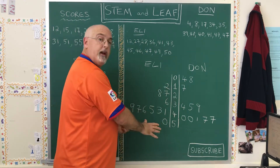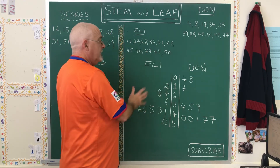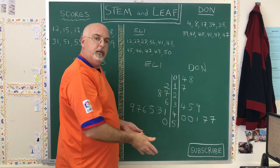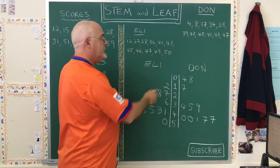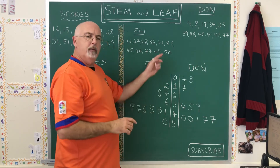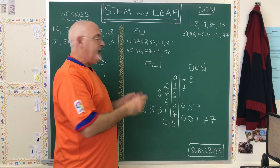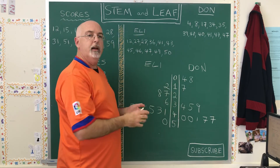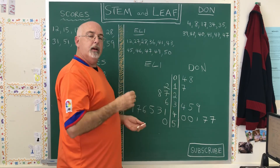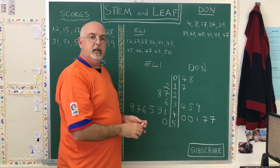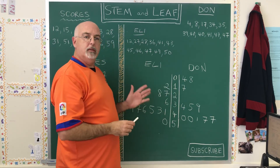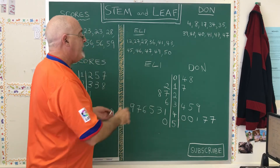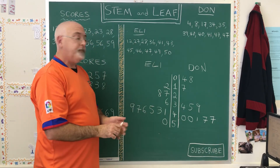So it looks a little strange, and the left side with Eli does look a little bit more difficult to read than the right side. But all of the techniques for making a stem and leaf table and reading it are things that quickly become easy once the student has practiced them just a little bit, and then it becomes very convenient to use.